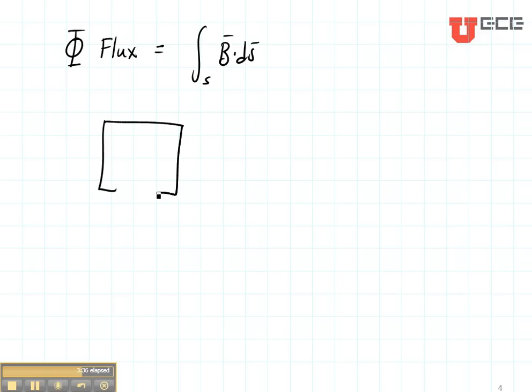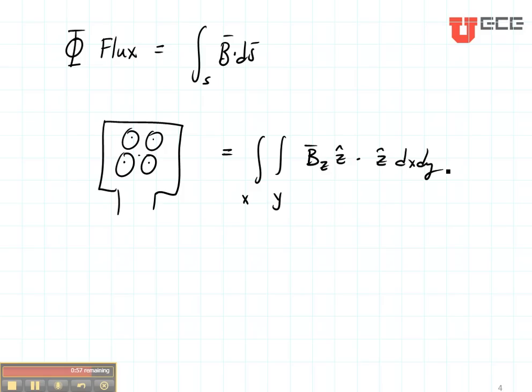So let's take the surface of my loop like this. Suppose that my magnetic flux density is coming out of the board. I simply add up all of the magnetic flux density that's inside this loop. In this case, it would be an integral over X and Y of some magnetic field and that would be the magnetic field in the Z direction if this was the Z directed loop dotted with a Z directed surface, for example.